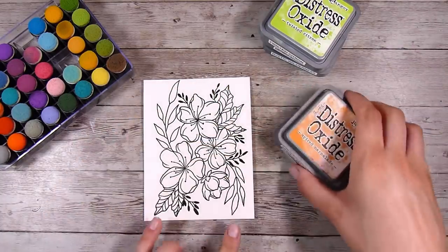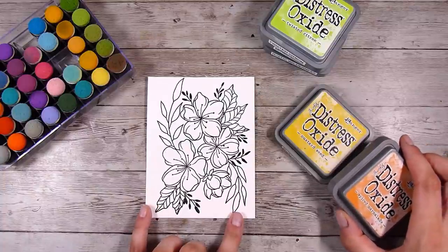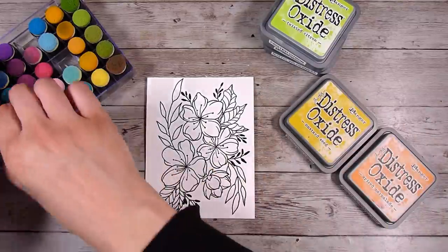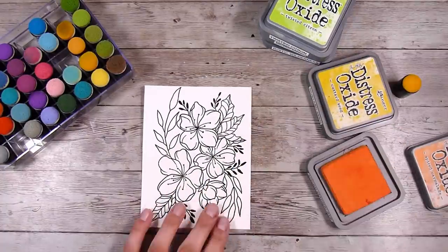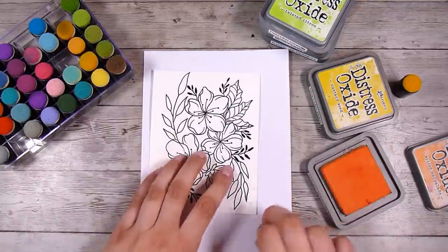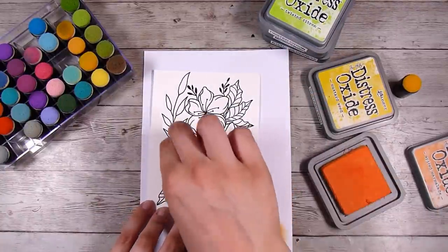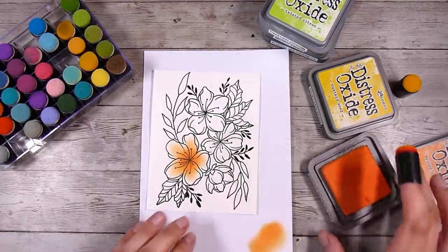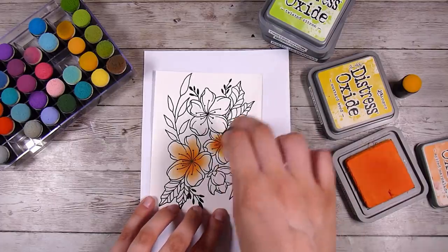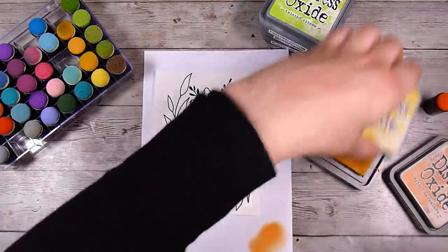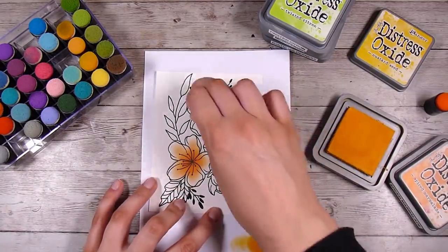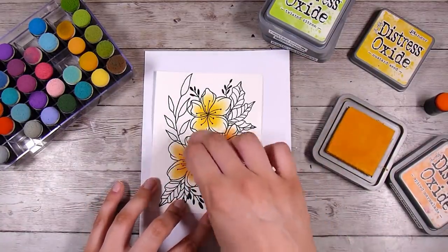This is always like my go-to when coloring flowers and things, using some finger daubers and some distress oxide inks because they go on so nicely. I am using some mustard seed and some spice marmalade, so basically a yellow and an orange. Any inks are going to work for this. You can use pigment inks, dye inks, hybrid inks. Anything is going to work just fine.